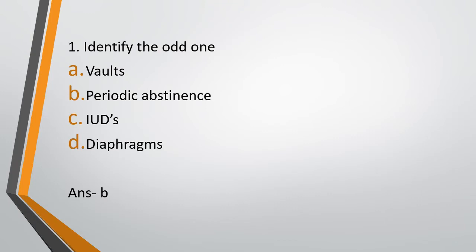And what are the other two natural methods of contraception given in the book? One is Lactational Amenorrhea and another one is Coitus Interruptus.